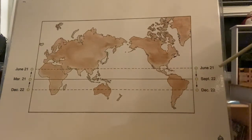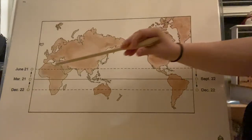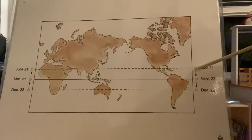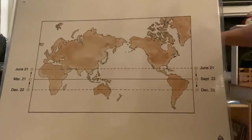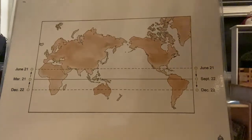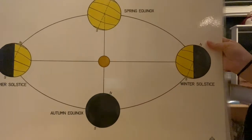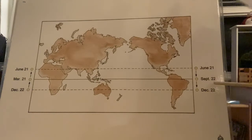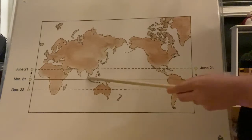Then we go to September 22nd. Remember, June 21st is when all the rays are hitting right on the Tropic of Cancer. The Earth continues to go around the sun and we end up at September 22nd. This is going to be our autumn or fall equinox, right here where we have equal days and equal nights. The perpendicular rays are shining right along the equator.